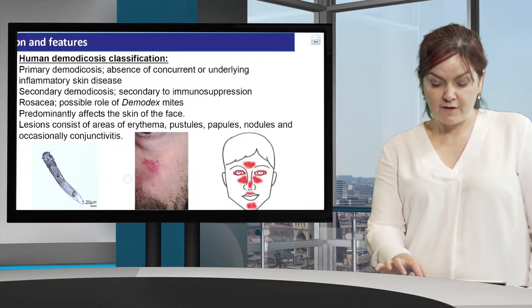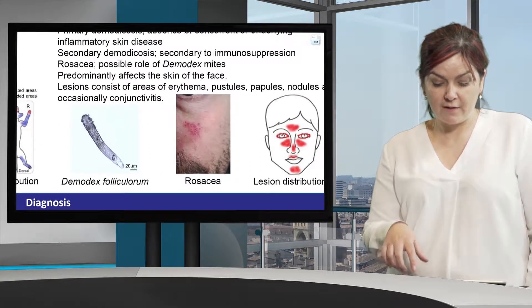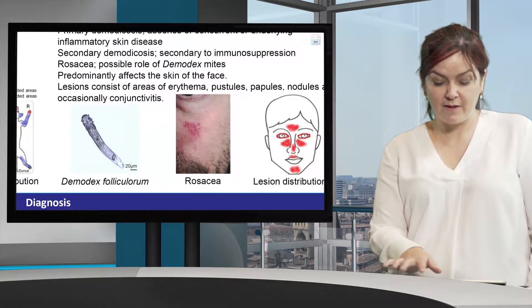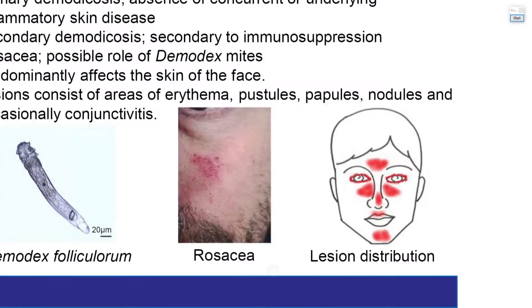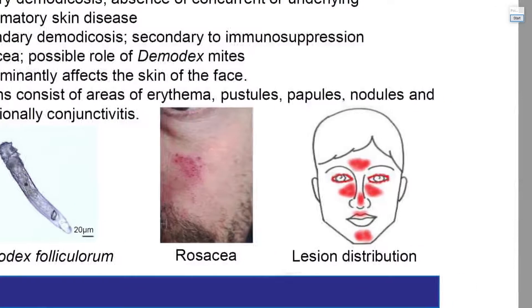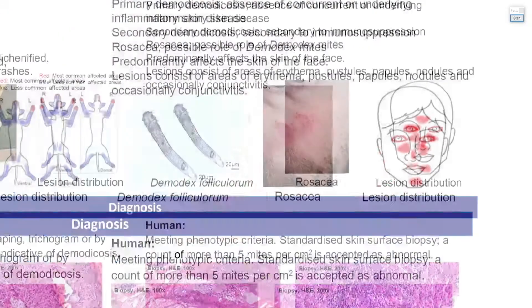The first picture is of Demodex folliculorum, and again we can see the similarity between demodex species — they are of the same family. This patient has an erythematous type of rosacea, and the lesion distribution is centrofacial.